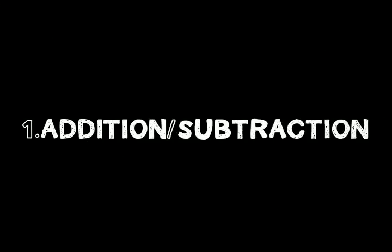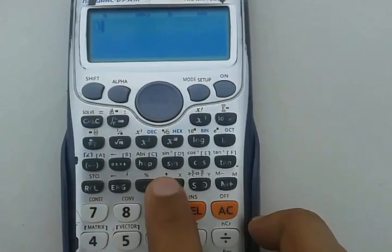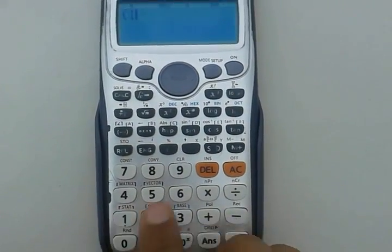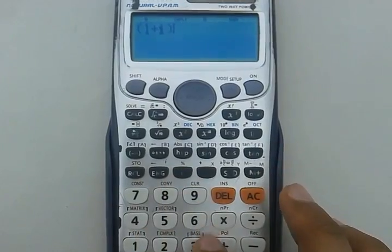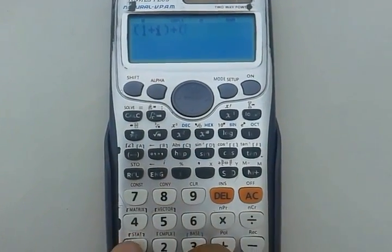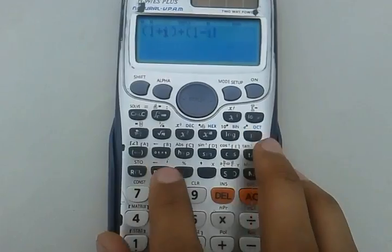Number one is addition or subtraction of complex numbers. This one is simple. Just write the complex number and then an algebraic sign, plus or negative, simply as in an algebraic function.